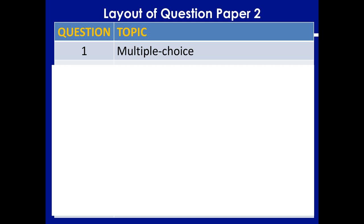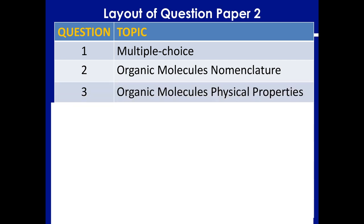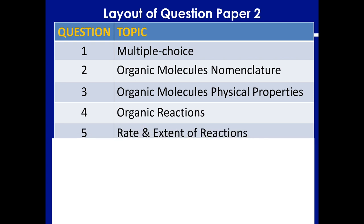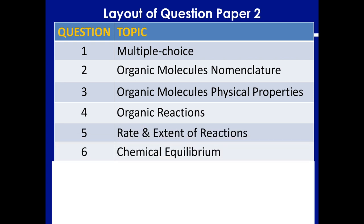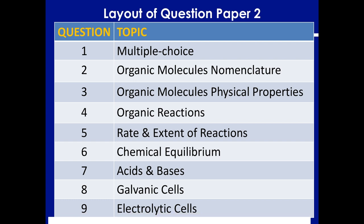Here's a run-through of your questions. Question 1 is multiple choice. Question 2 is organic naming with the IUPAC system. Question 3 is physical properties — normally vapour pressure and boiling point. Question 4 is organic reactions. Question 5 is reaction rates. Question 6 is chemical equilibrium. Question 7 is acids and bases and pH calculations. Question 8 is galvanic cells, and Question 9 is electrolytic cells. Polymers and fertilizers are no longer examined.